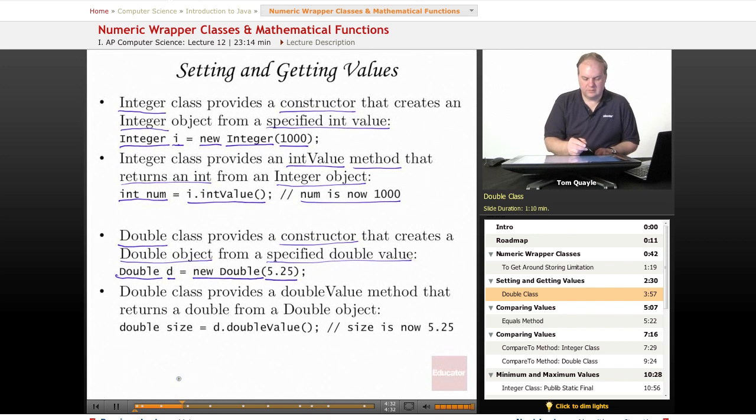To get the value out of a Double object, I call the method doubleValue of the object of type Double. That returns the value that was stored in variable d and then I can assign that to a variable of the primitive type double called size. So size would now contain 5.25 if I did this after setting the value to 5.25 in the Double object.